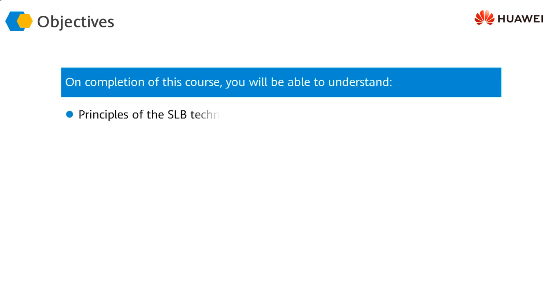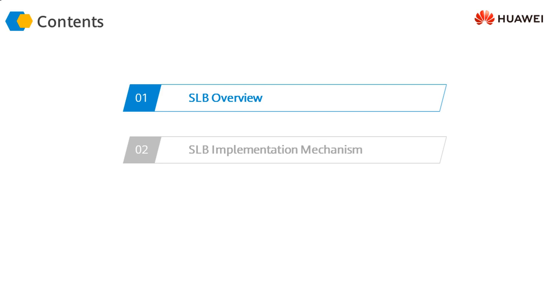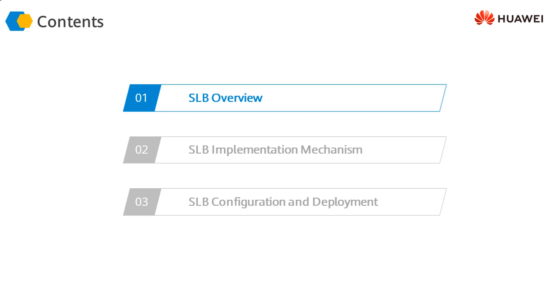The objectives of this module are to look at the basic principles and concepts of server load balancing technology, and then look at the deployment and configuration of load balancing on the firewall. The contents include a basic overview of SLB, different scenarios in which SLB can be implemented, and finally the configuration and deployment of SLB.